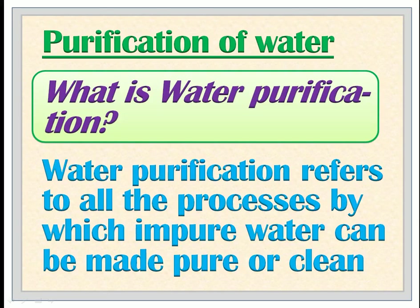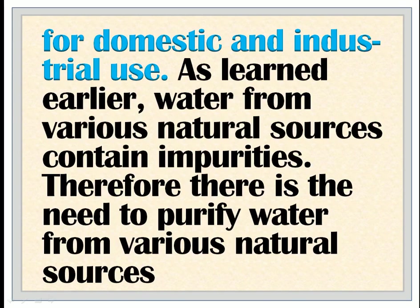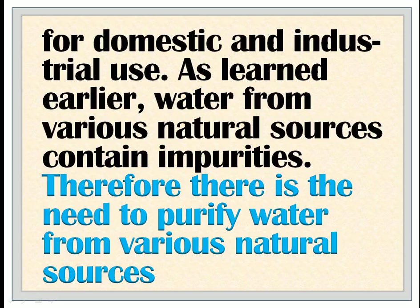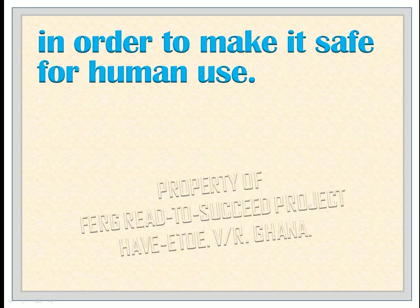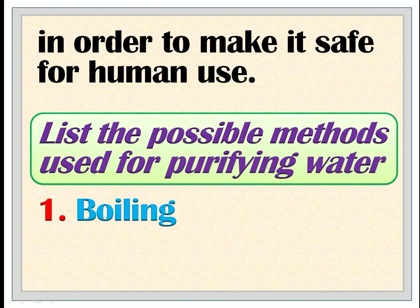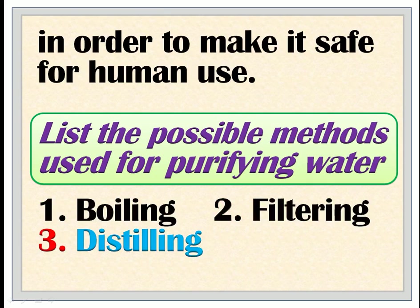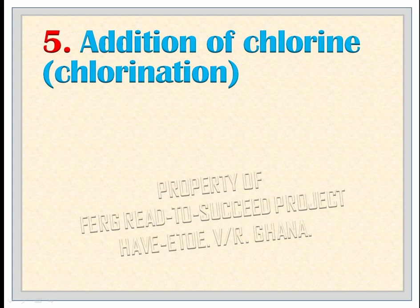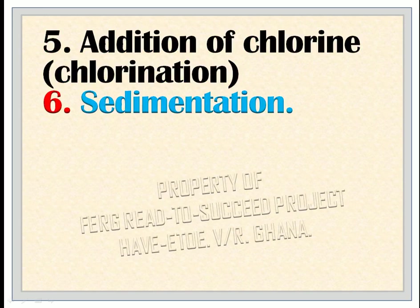Water purification refers to all the processes by which impure water can be made pure or clean for domestic and industrial use. As learned earlier, water from various natural sources contains impurities. Therefore there is the need to purify water from various natural sources in order to make it safe for human use. List the possible methods used for purifying water: 1. Boiling. 2. Filtering. 3. Distilling. 4. Addition of alum. 5. Addition of chlorine or chlorination. 6. Sedimentation.